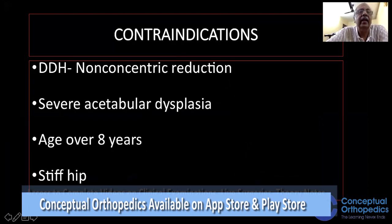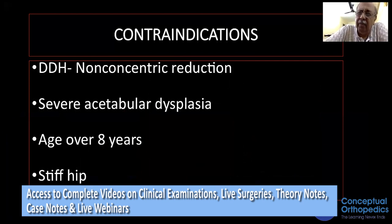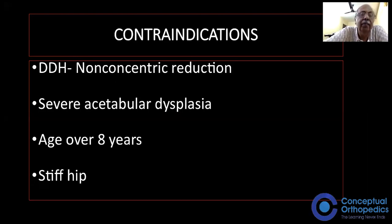Contraindications: it should not be done when there is a non-concentric reduction, or in severe cases, because the amount of coverage possible is minimal — so in severe acetabular dysplasia it cannot be done. Age over eight years is also a contraindication as the pubic symphysis may not be flexible, and if the hip is stiff it should not be done either.